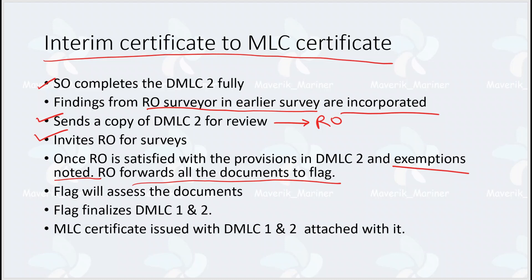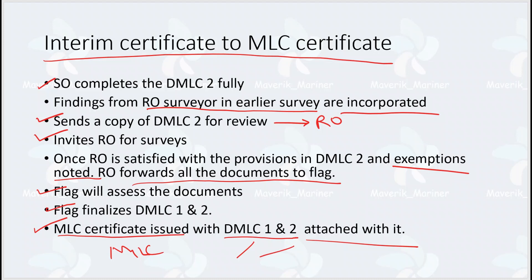Once the RO is satisfied with the provisions in DMLC Part 2, exemptions are noted, and the RO forwards all documents to the flag. The flag assesses the documents, finalizes DMLC Part 1 and DMLC Part 2, and issues the main MLC certificate. The main MLC certificate is issued along with endorsed copies of DMLC Part 1 and Part 2 attached to it. On board the ship, the MLC certificate will have attached copies of DMLC Part 1 and Part 2 kept together.